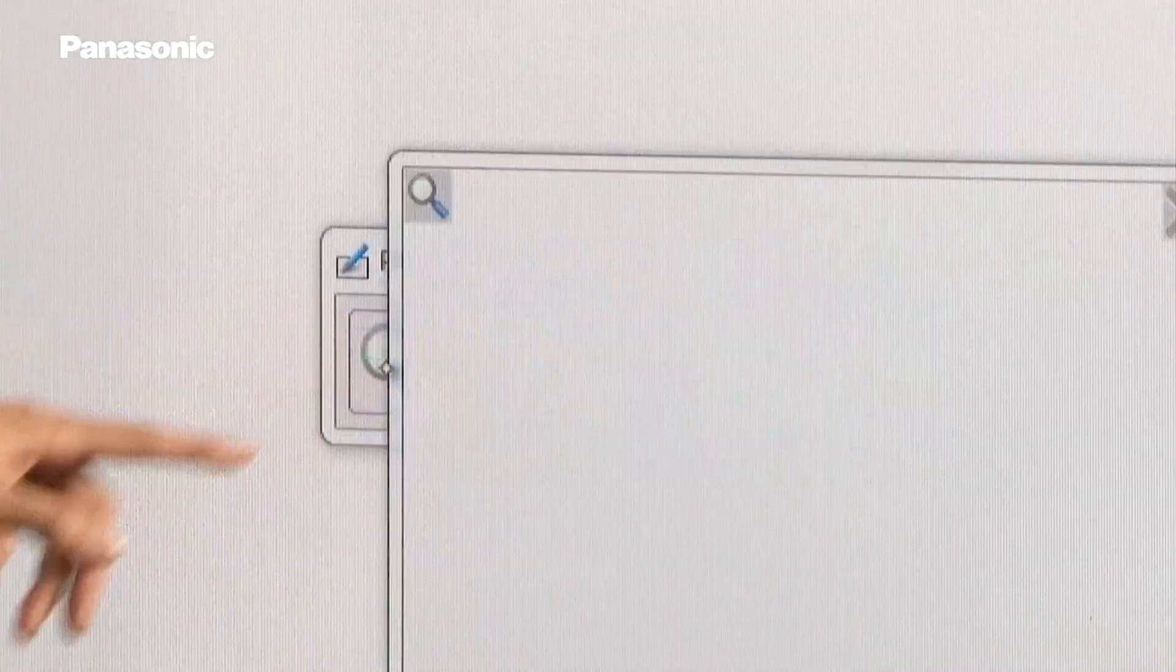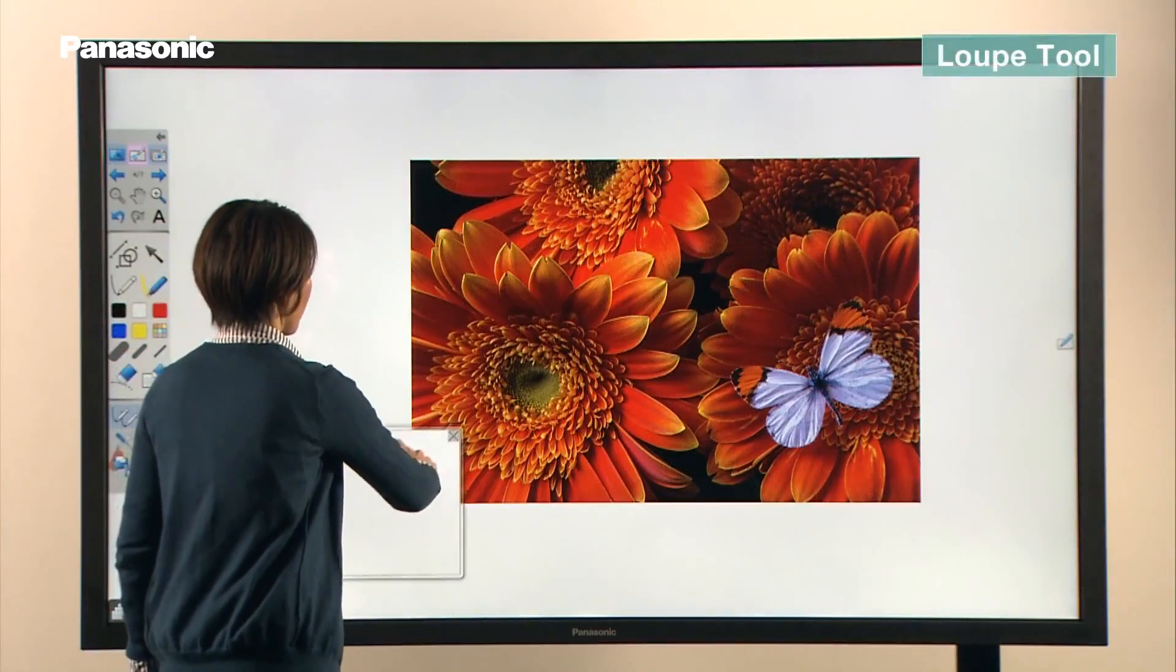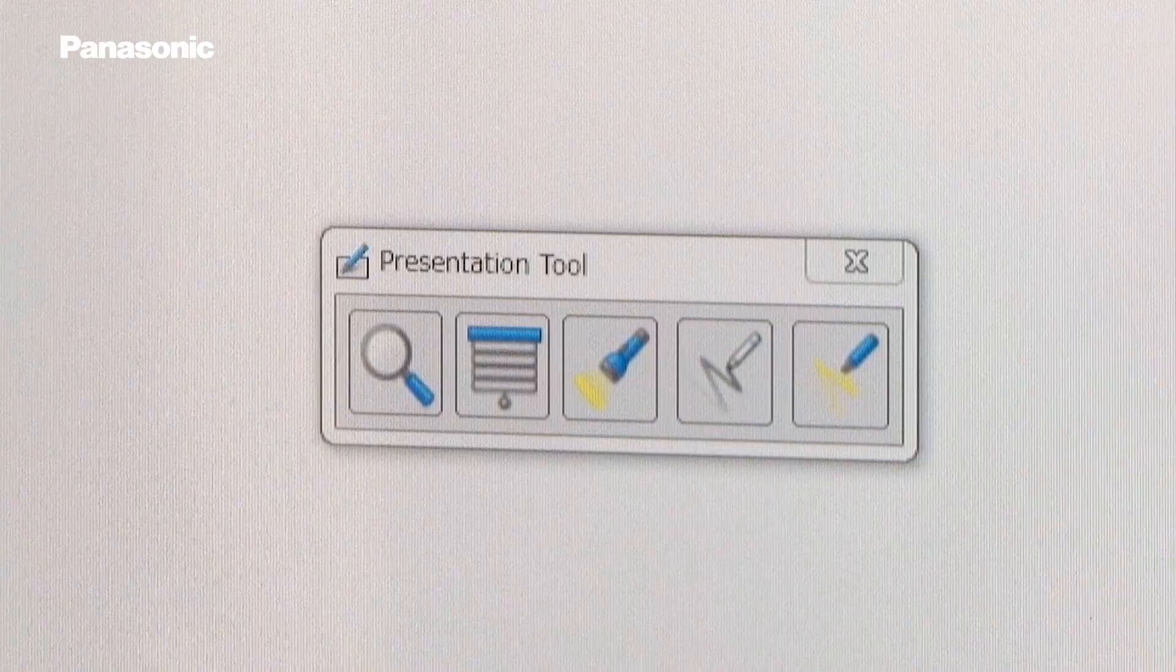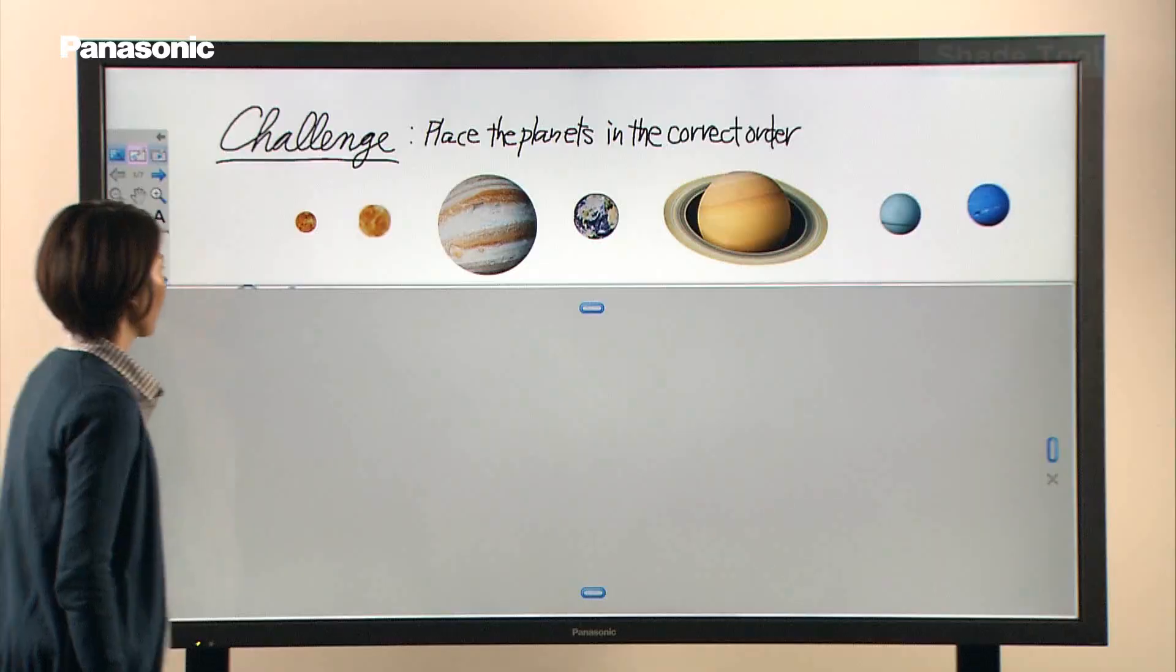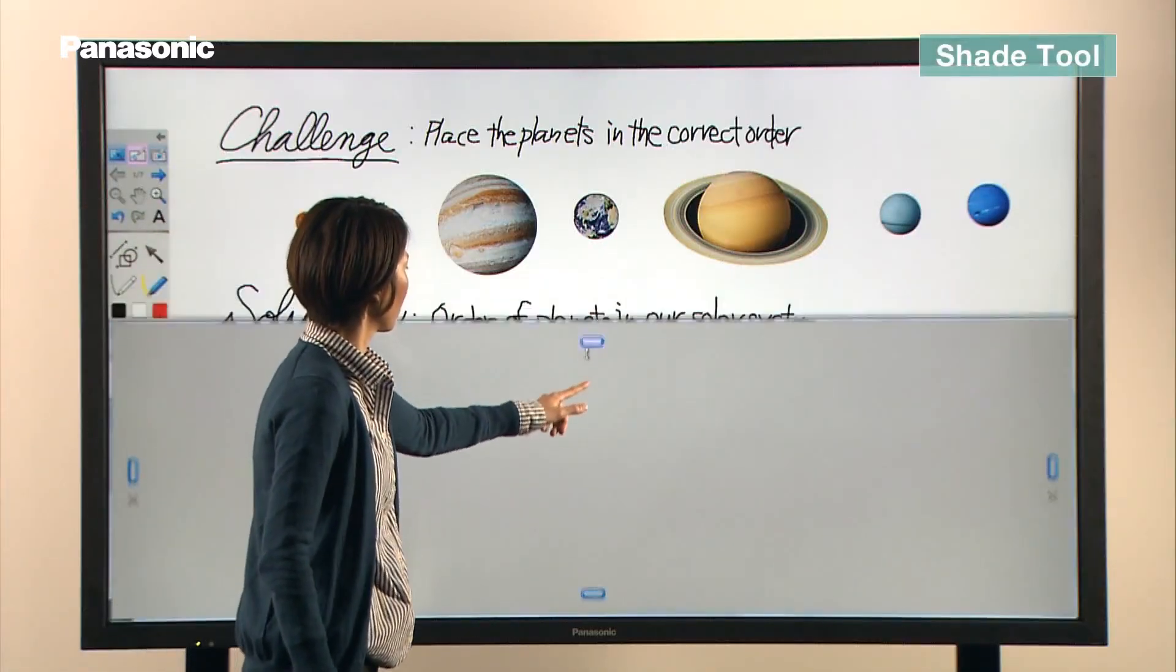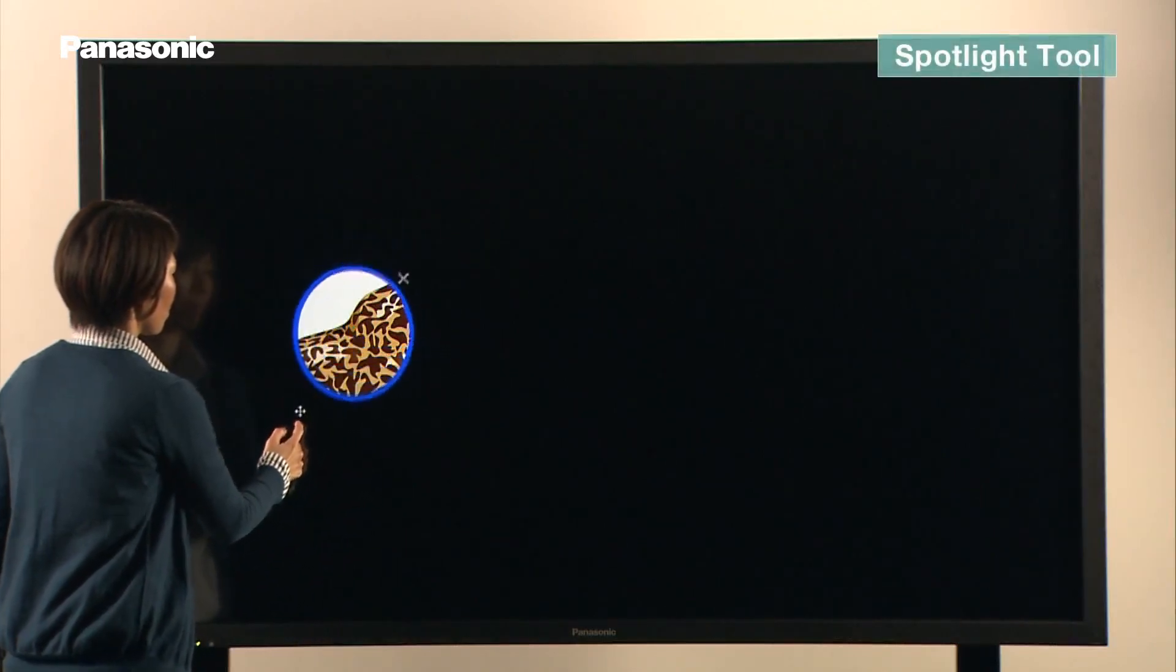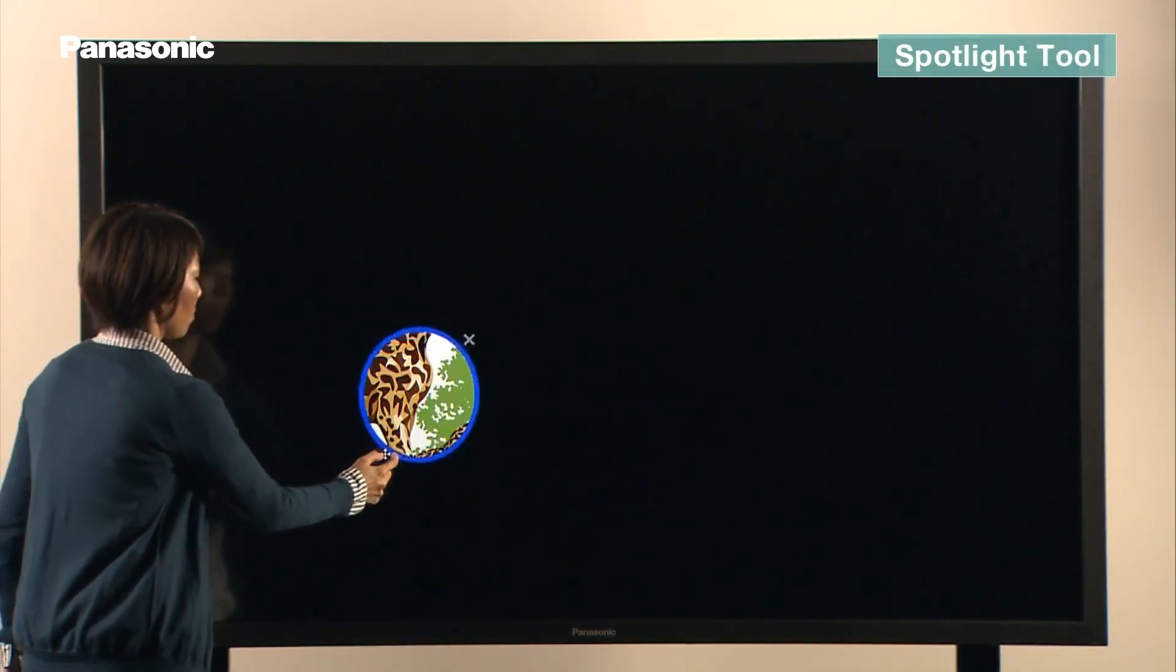The display includes other useful tools. The loop can enlarge areas you want to see in more detail. Answers to problems can be masked using the shade tool, which covers a selected part of the screen. Spotlight tool highlights a specific area of the screen to attract attention.